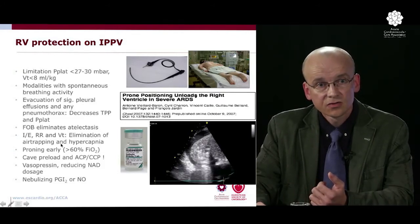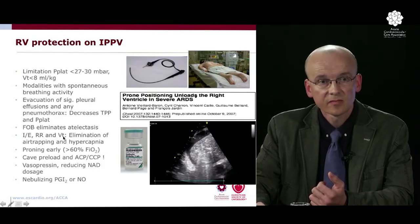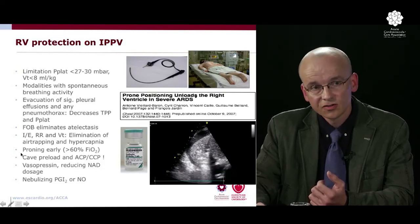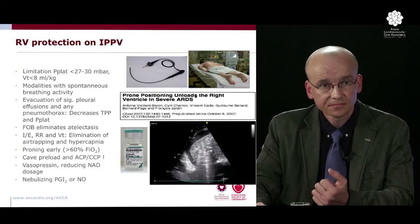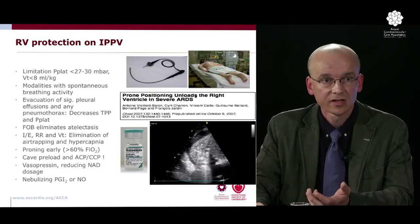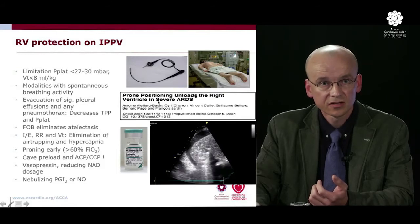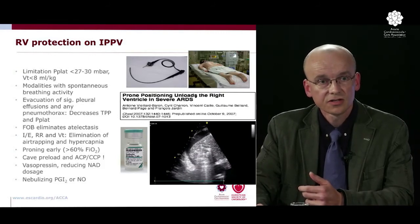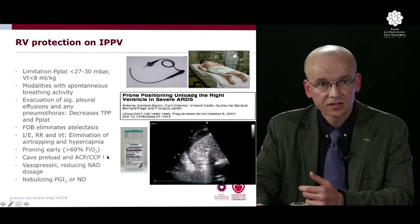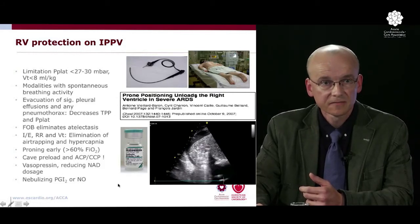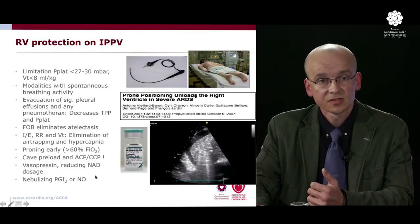Ventilation settings should address hypercarbia as this also increases right ventricular afterload. Prone your patient early — there is not only a ventilation and oxygenation indication to proning, but also a right ventricular indication. Patients with right ventricular decompensation can be helped with early proning, which improves both hemodynamic and respiratory outcomes. Titrate preload very judiciously in right ventricular problems. You can reduce vasopressor doses like noradrenaline by using vasopressin, and use nebulized vasodilators like prostacycline or nitric oxide.